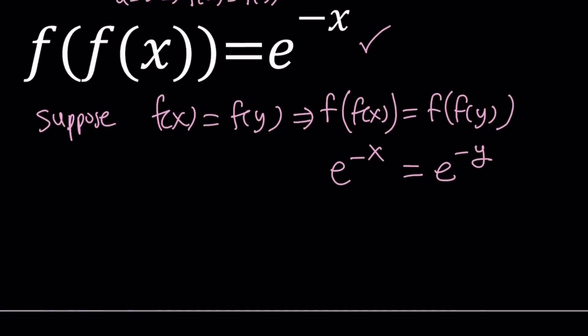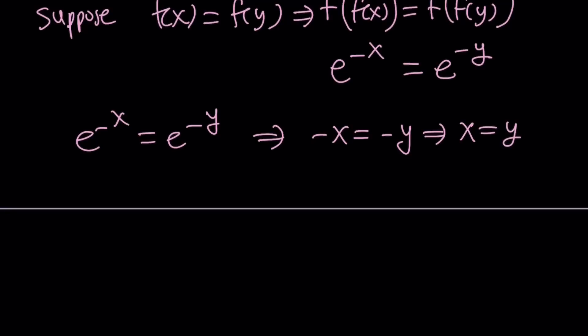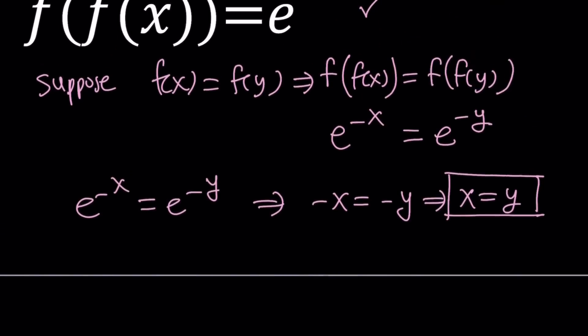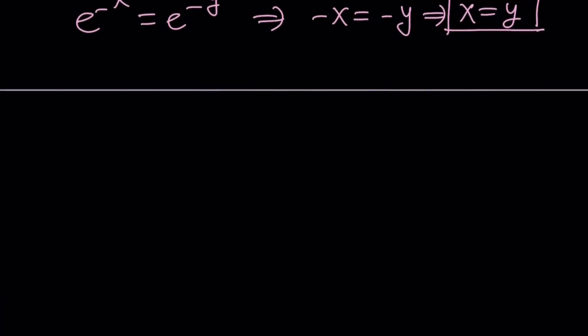What does this imply? If e to the power negative x equals e to the power negative y, then this implies negative x equals negative y, and that implies x equals y. This follows from the fact that e to the power x is always increasing and is 1-to-1. So x equals y follows from the initial assumption that f of x equals f of y, meaning f of x equals f of y implies x equals y.